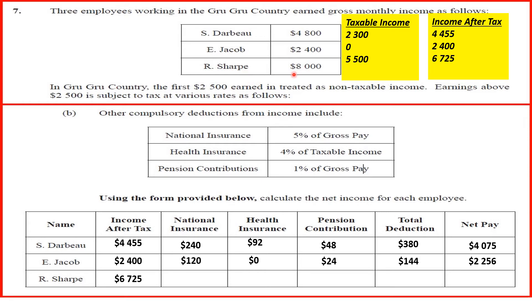For R. Sharp: national insurance is 5% of $8,000, giving $400. Health insurance is 4% of taxable income $5,500, giving $220. Pension contribution is 1% of $8,000, giving $80. Adding those three columns gives total deductions of $700. Subtracting $700 from R. Sharp's income after tax gives a net pay of $6,025. That takes care of Part B.